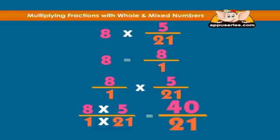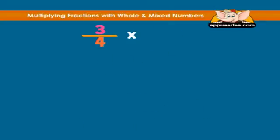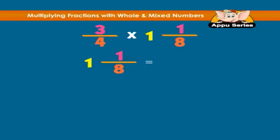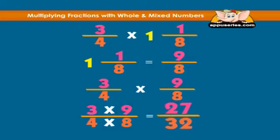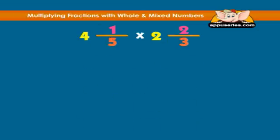Let's look at another example: 3/4 times 1 and 1/8. This is very easy — just convert 1 and 1/8 into an improper fraction. 1 and 1/8 is equal to 9/8. So 3/4 times 9/8 is 3 times 9 over 4 times 8, and the answer is 27 over 32.